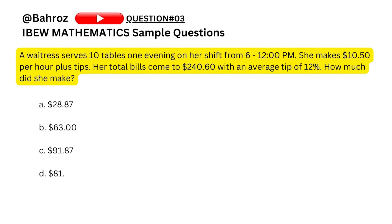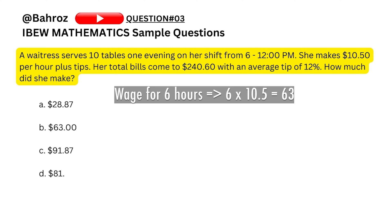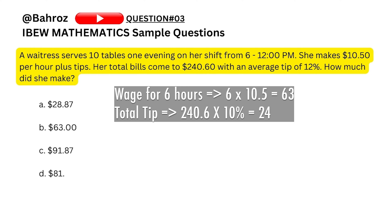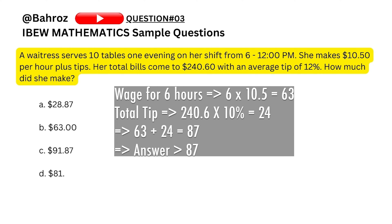Question three: a waitress serves 10 tables one evening on her shift from 6 to 12 p.m., which is six hours. She makes $10.50 per hour plus tips. Her total bills come to $240.60 with an average tip of 12%. Her total normal shift wage is six hours times $10.50: 6 times 10 is 60, 6 times 0.5 is 3, so $63. Ten percent of $240.60 is $24, so 12% is slightly more than $24. Adding $63 plus $24, the answer will be slightly more than $87. The only option more than $87 is $91.87, so the answer is C.